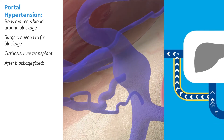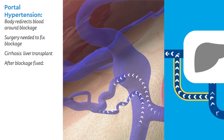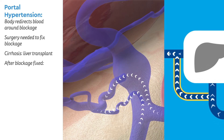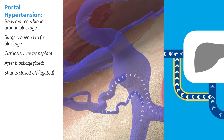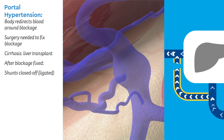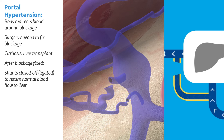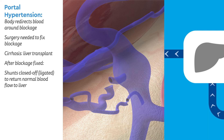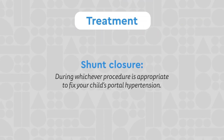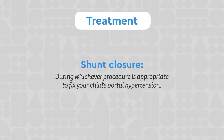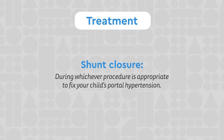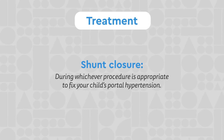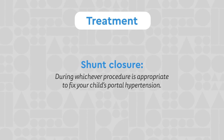However, the shunts are still directing blood away from the portal vein. These shunts must be closed off, or ligated, in order for all of the original blood to flow back through the portal vein and into the liver. The closing of shunts happens during whichever procedure is appropriate to fix your child's portal hypertension, such as a liver transplant.